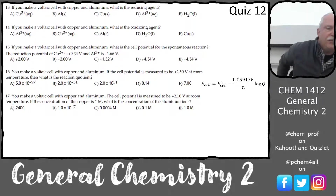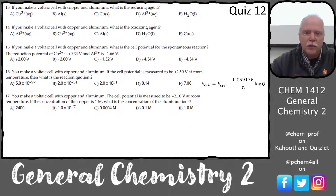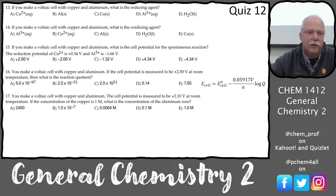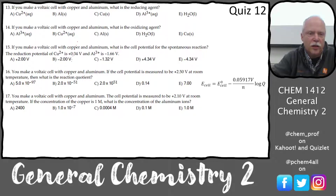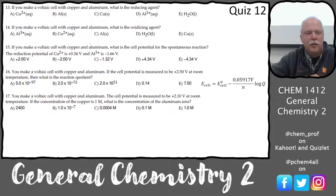So it's kind of at the end — there are like three questions that go together, so I'll just work all three of those. We're looking at this and I've got that table here. This is asking you: if you make a voltaic cell with copper and aluminum, which one is the reducing agent and the oxidizing agent and all that? So we want to make a spontaneous cell with copper and aluminum.